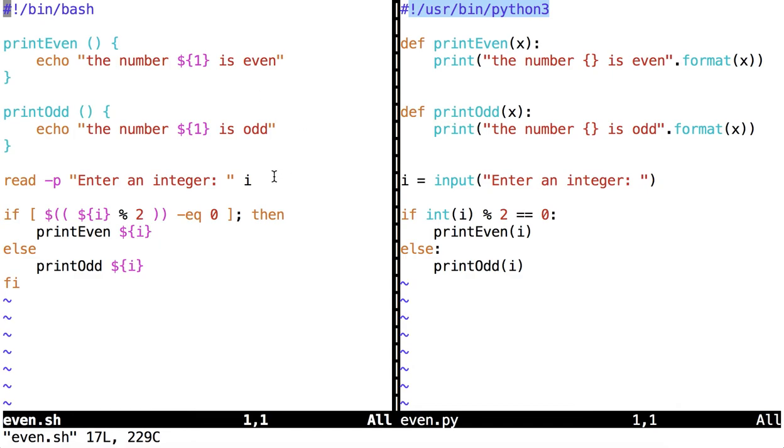So when we run these scripts, really the first line that we're running is the read line in the bash script and the input line in the python script. Now even though there are differences syntactically, these two lines are doing the same thing, prompting the user to enter an integer. So read, with the p flag, gives the prompt enter an integer.